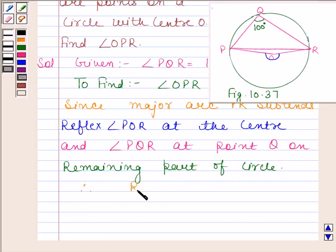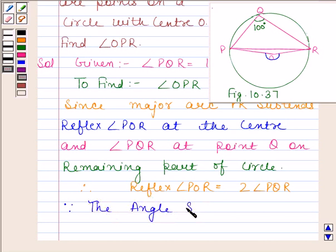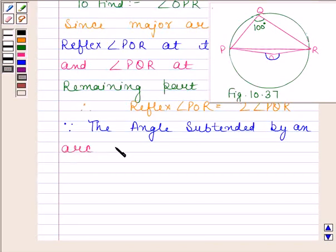Therefore, reflex angle POR is equal to 2 times angle PQR by theorem 10.8 given in your NCERT book, and it states that the angle subtended by an arc at the center is double the angle subtended by it at any point on the remaining part of the circle.